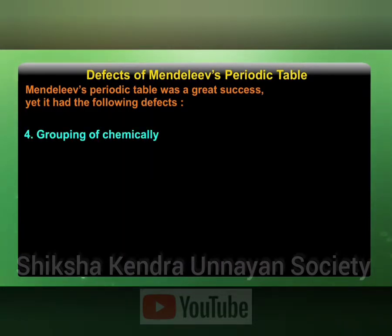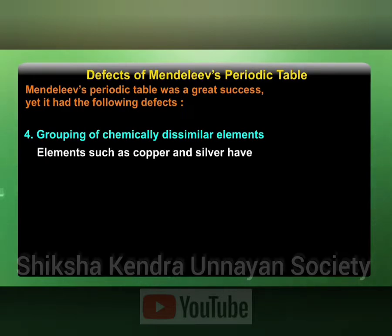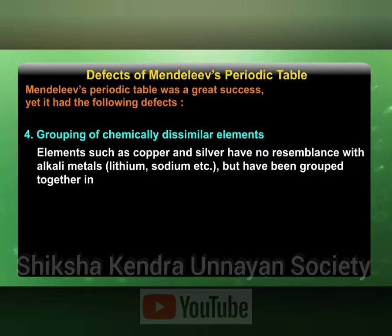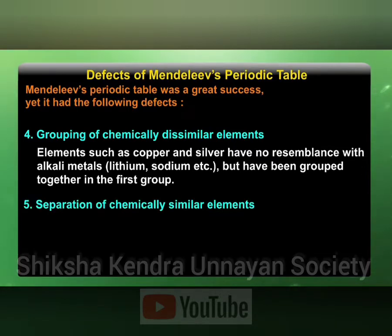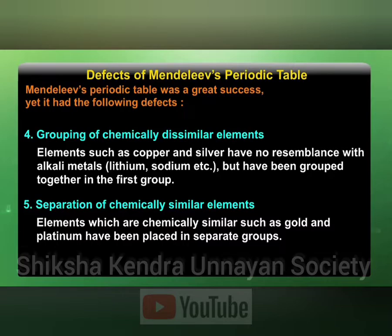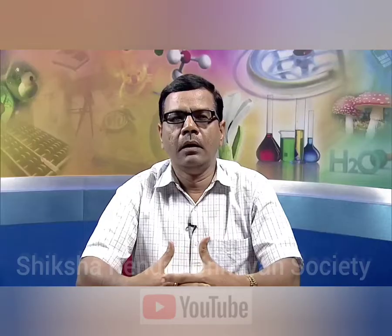Grouping of chemically dissimilar elements: elements such as copper and silver have no resemblance with alkali metals like lithium, sodium, etc., but have been grouped together in the first group. Separation of chemically similar elements: elements which are chemically similar, such as gold and platinum, have been placed in separate groups.